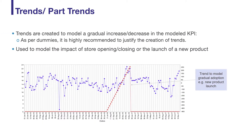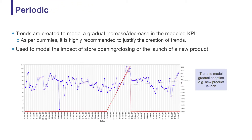Trends and part trends are created in order to model the gradual increase or decrease in your model KPI. Examples include the launch of a new product, the delisting of a product, or in the retail sector, modeling the opening or closure of a store.